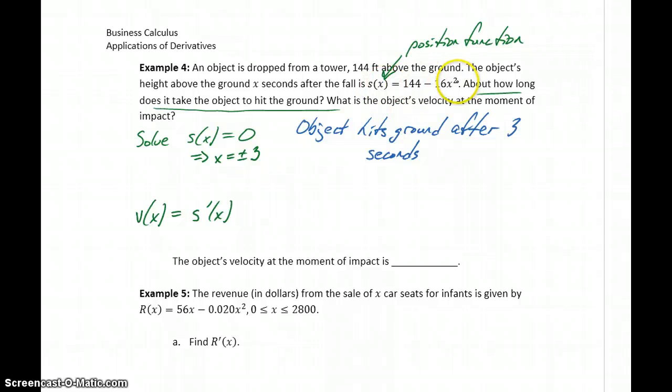We could plug this function into Wolfram Alpha, ask it to take the derivative, we've demonstrated a couple examples of that, but what you should be able to get is negative 32x, and again, this is our velocity function.